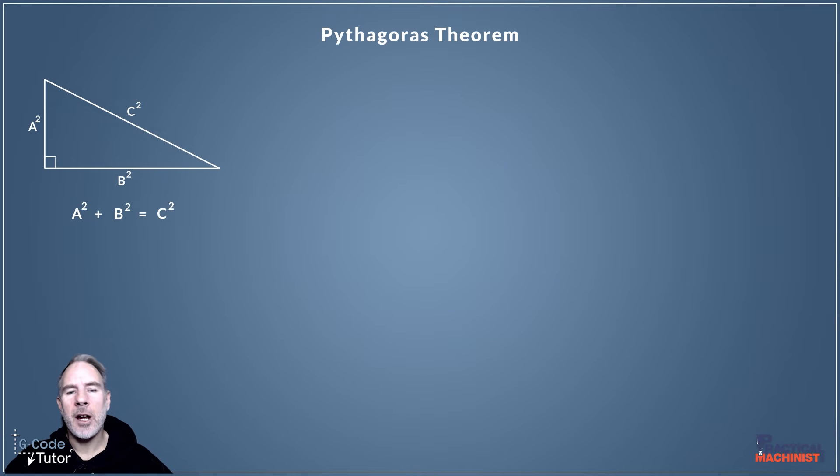So let's say our triangle has a shorter side of 3 and the bottom side there is 4, and we're trying to calculate what C is. So by using Pythagoras's theorem, we know that A squared plus B squared is equal to C squared. And by the way, if you're ever asked to describe Pythagoras's theorem in a job interview, simply say that A squared plus B squared equals C squared is the correct answer.